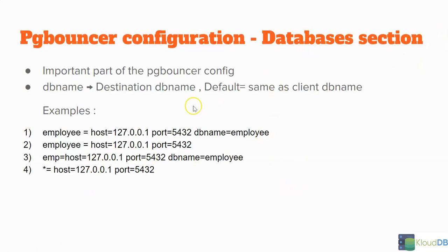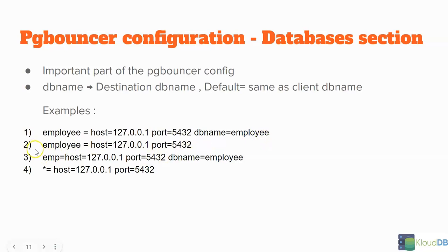Let's look at the databases section and various examples, as this is an important part of PG Bouncer config. In the first example, you give employee equals host equals a specific host, port equals 5432, DB name equals employee — any connection coming to PG Bouncer with this name will be sent to that host and port with backend DB name employee. In the second example, you have the same info but no DB name specified — by default, whatever alias is present will also be the backend DB name.